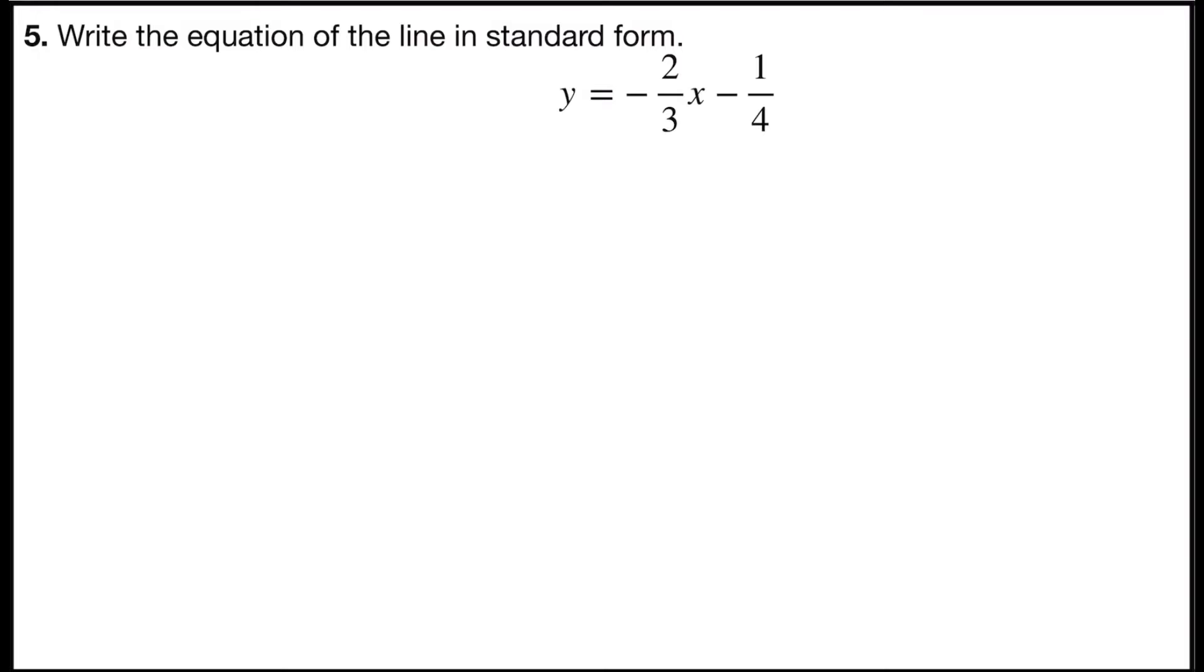Problem number five says write the equation of the line in standard form. Our equation in slope-intercept form says y equals negative two thirds x minus one fourth.